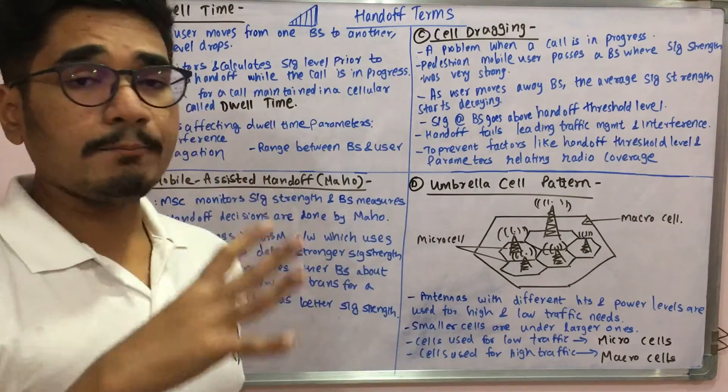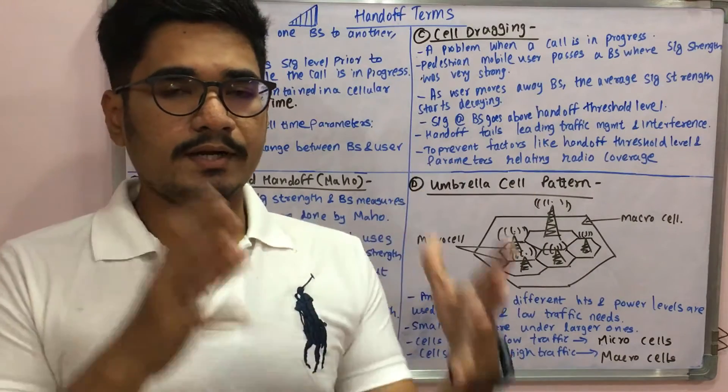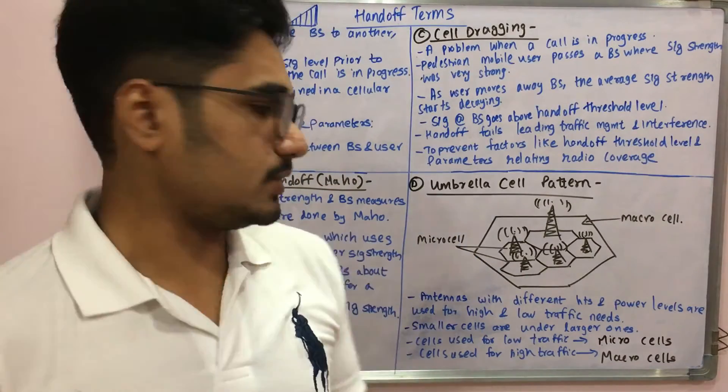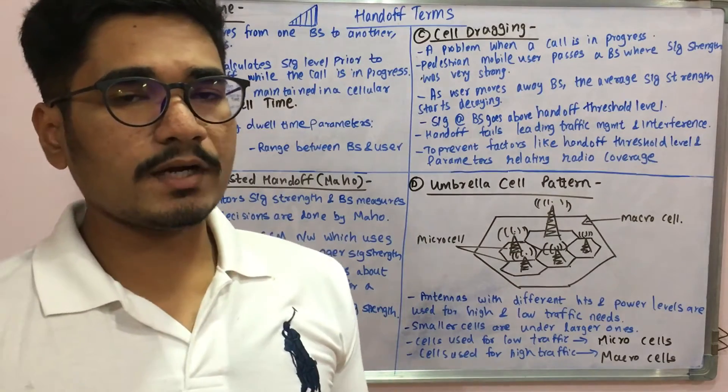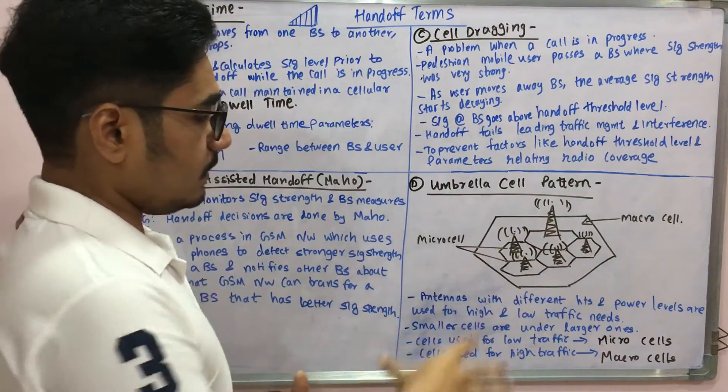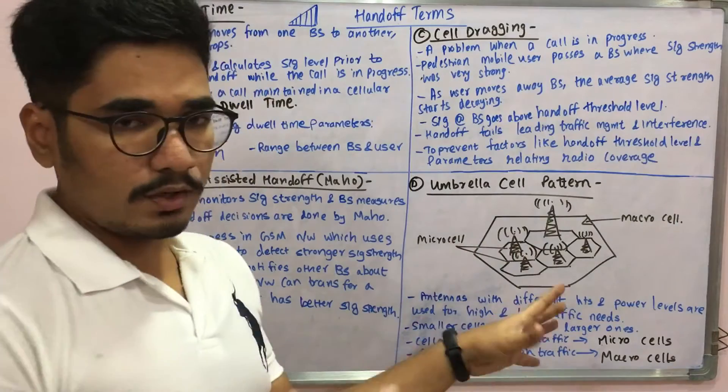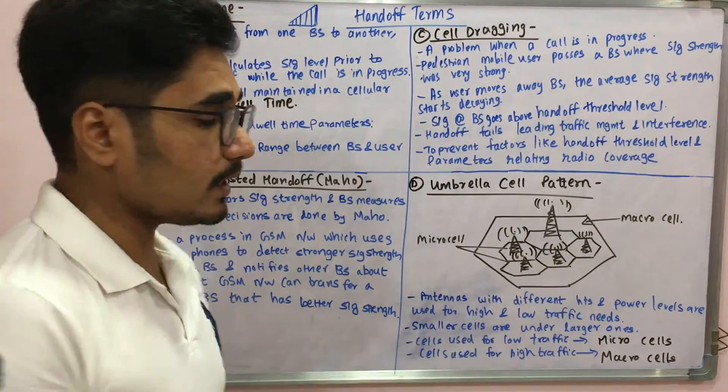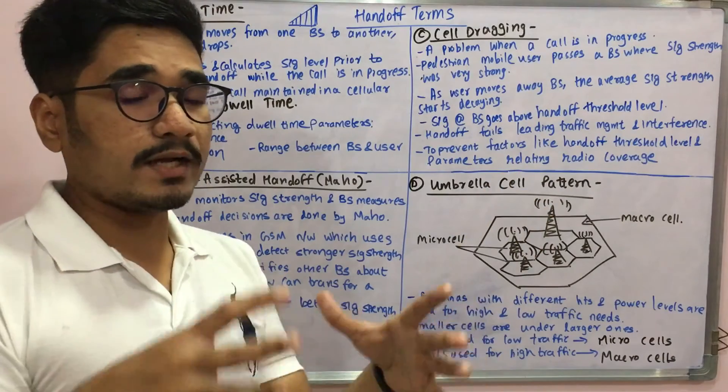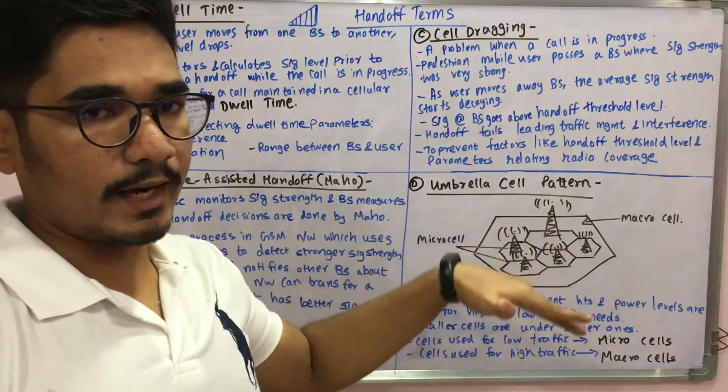Next we have the fourth concept: the umbrella cell pattern. To meet different traffic needs, you have different antennas, networks, and towers installed at various stations and places with different heights and ranges. The power levels in these base stations play a very crucial role. The smaller cells in the setup are under the larger one. The cells which are used for low traffic are called micro cells, and cells which are used for high traffic are called macro cells. This arrangement where you have a macro cell with micro cells inside forming an umbrella is called an umbrella cell pattern, so you get better handoff in this arrangement.